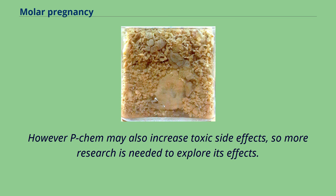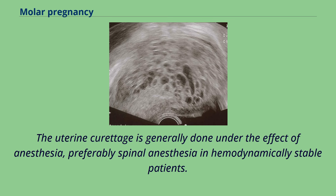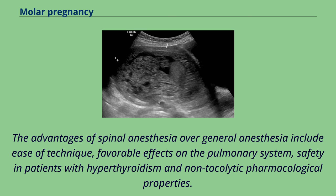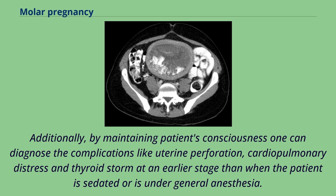However, prophylactic chemotherapy may also increase toxic side effects, so more research is needed to explore its effects. The uterine curettage is generally done under the effect of anesthesia, preferably spinal anesthesia in hemodynamically stable patients. The advantages of spinal anesthesia over general anesthesia include ease of technique, favorable effects on the pulmonary system, safety in patients with hyperthyroidism, and non-tocolytic pharmacological properties. Additionally, by maintaining patient consciousness, one can diagnose complications like uterine perforation, cardiopulmonary distress, and thyroid storm at an earlier stage than when the patient is sedated or under general anesthesia.